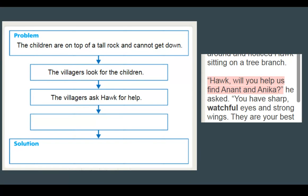Our next detail is highlighted in red again. It says, 'Hawk, will you help us find Anant and Anika?' So we're going to simply say: the villagers ask Hawk for help. We don't want to pull exactly the words from the text — we want to use our own words when we come up with the detail.